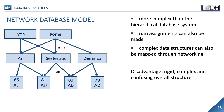The network database model is thus more complex than the hierarchical database model. It is also possible to make N-to-M assignments, so that complex data structures can be mapped through networking. One disadvantage, however, is that the database thus has a rigid, complex and confusing overall structure. The two database models considered suffer from inefficiencies that often reside from redundancies in the underlying data representation, leading to slow access to the data as well as cumbersome storage mechanisms.